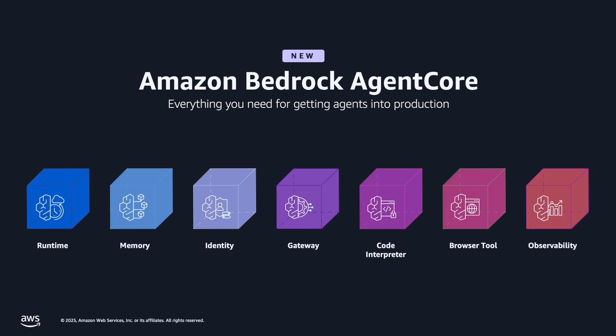Next is Agent Core Identity. Agents need to securely access other agents and tools, and this is where Agent Core Identity helps. It provides secure, centralized access management for AI agents, enabling seamless integration with AWS resources and third-party services. Currently, it supports some widely used identity providers, including Amazon Cognito, Okta, and Microsoft Entra ID.